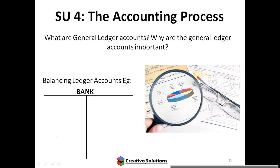For example, assets can include land and buildings and vehicles. Land and buildings are not the same as a vehicle — they are two completely different items, so it's not accurate to group them as one. We need to separate and show them individually. The general ledger accounts record individual accounts that follow a specific rule.